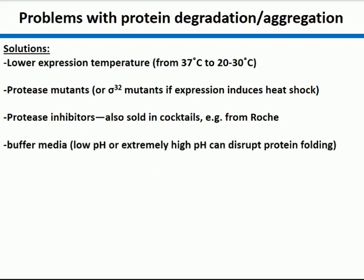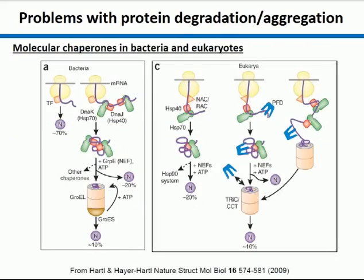You could also use a buffered media. Usually we grow our cells in LB which is unbuffered, but very low or very high pH can also cause protein unfolding. When you lyse your cells, the heat shock response may already be on from high or low pH, or it could affect the pH of the buffer you lyse your cells in. So it might be a good idea to buffer your media.